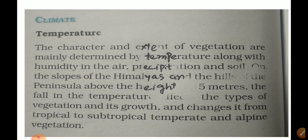On the slopes of the Himalayas and the hills of the peninsula, above certain heights, the fall in temperature affects the types of vegetation. Vegetation changes from tropical to subtropical, temperate, and alpine as altitude increases along the slopes of the Himalayas.